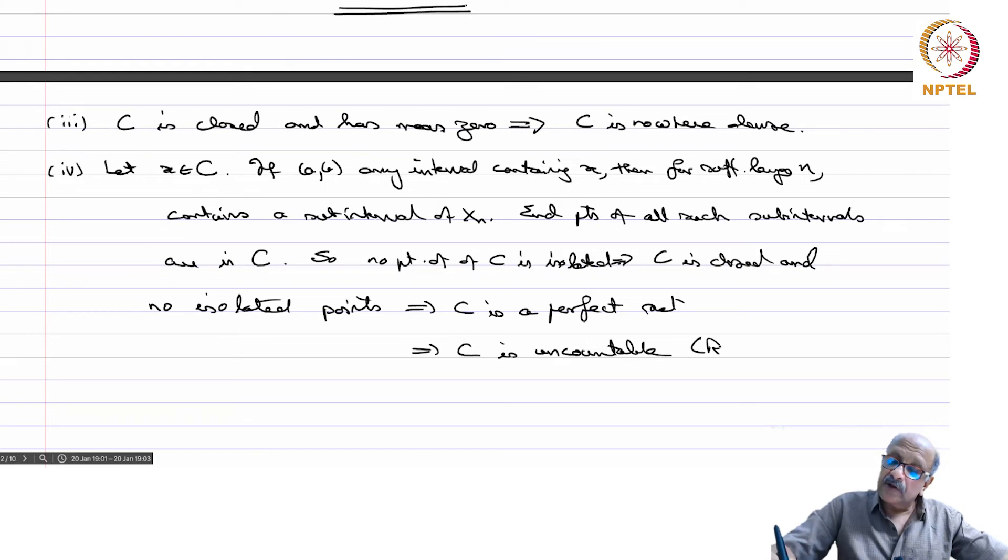So this is the theorem from Rudin. You can check in Rudin's book, for instance Principles of Mathematical Analysis, that a perfect set in R should always be uncountable.